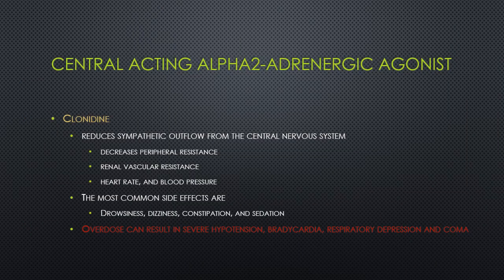Centrally acting alpha-2 adrenergic agonists, or alpha-2 drugs such as clonidine, reduce sympathetic outflow from the central nervous system. This decreases peripheral vascular resistance, renal vascular resistance, and heart rate and blood pressure. Clonidine, marketed as Catapres, is commonly used for hypertension and also for insomnia and anxiety or restlessness. The most common side effects are central nervous system depression such as drowsiness, orthostatic hypotension causing dizziness, and constipation and sedation.